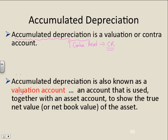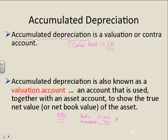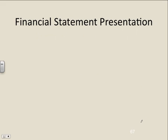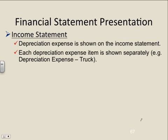Accumulated depreciation is also known as a valuation account because it helps us, together with the asset account, show the true net value — and we call this net book value (NBV). For example, if the car cost $10,000, your balance sheet will always show automobile at $10,000, and right below it you'll have accumulated depreciation. Let's say we've accumulated $200 — subtract that and the net book value of our car is $9,800. That's the value of the car on paper, not the market value — don't confuse book value with market value. Net book value is the cost of your asset minus the accumulated depreciation.